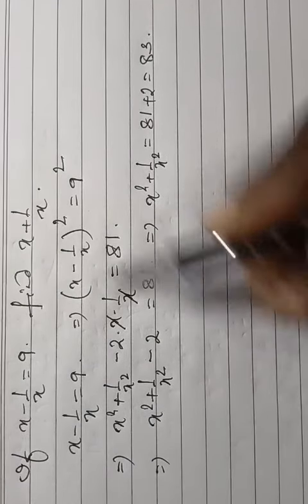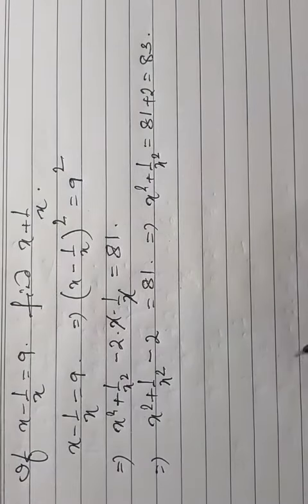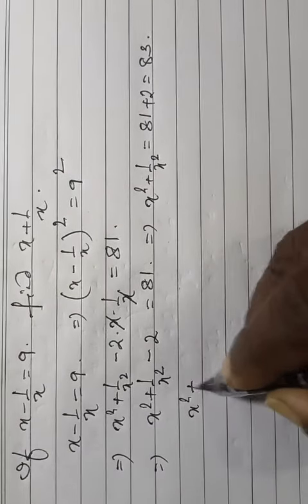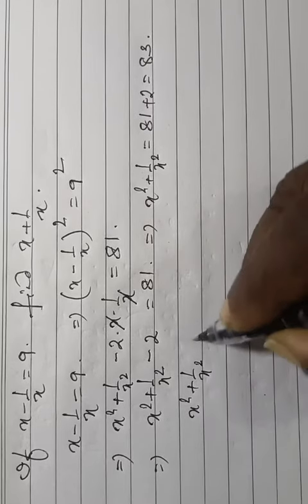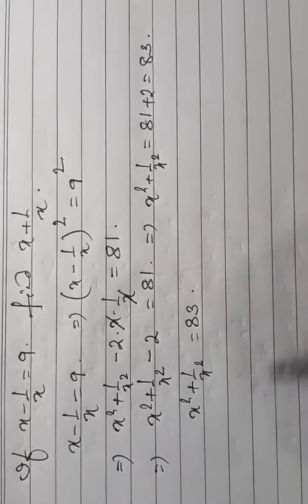We need x plus 1 by x. Here, x square plus 1 by x square is equal to 83.